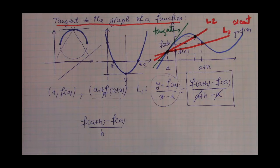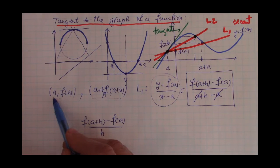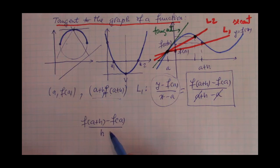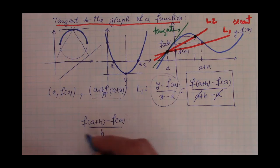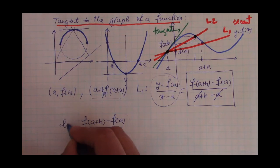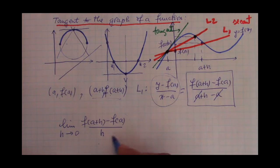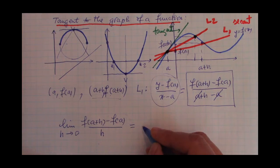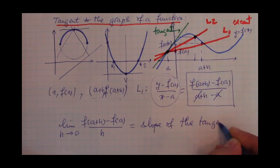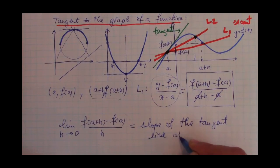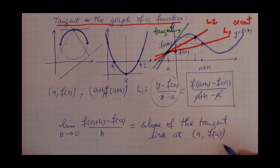As the points a and a+h on the x-axis get closer and closer to each other, ideally this quantity will approach a certain value. In calculus we denote this idea — that the quantity approaches a certain value — by writing the limit as h approaches 0. That limit is what we want to be the slope of the tangent line at the point (a, f(a)).